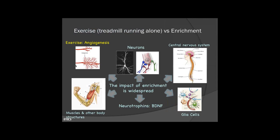Exercising on the treadmill primarily just causes an increase in blood vessel activity to certain areas — brain and spinal cord — referred to by the medical term angiogenesis. In enrichment, though, we have a widespread type of response. The neurons are going to respond by making more connections. The central nervous system becomes more awake. Cells that support neurons, called glial cells, become activated in a different way. Muscles will respond in a different way. And the neurotrophic factor — the protein called BDNF — is also upregulated when you have enrichment as opposed to just straight exercise.